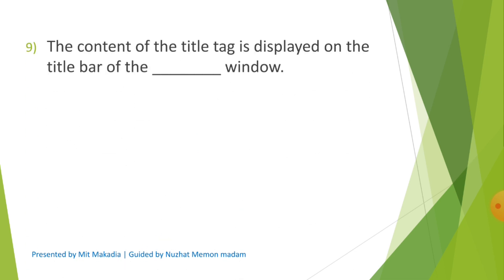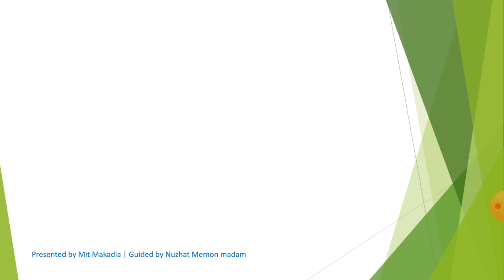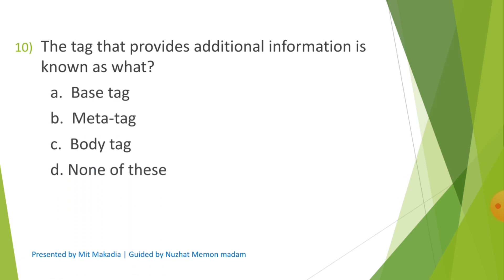Question 9: The content of the title tag is displayed on the title bar of which window? Options are A) Document, B) Browser, C) Desktop, D) None of these. The correct answer is B) Browser. Question 10: The tag that provides additional information is known as what? Options are A) Base tag, B) Meta tag, C) Body tag, D) None of these. The correct answer is B) Meta tag.